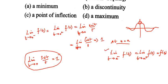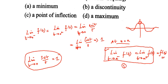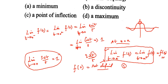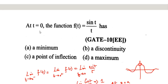The limit value is 1. But we cannot find f(0) using sin(t)/t — if you substitute t = 0, you get 0/0, which is not defined. So the function is not continuous at t = 0, meaning it is discontinuous. The second answer is correct.